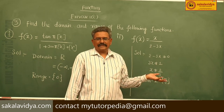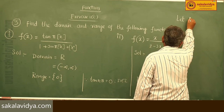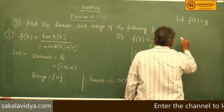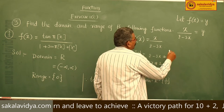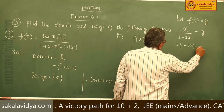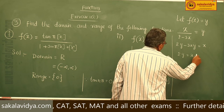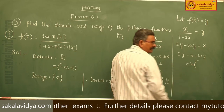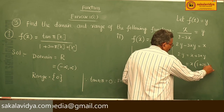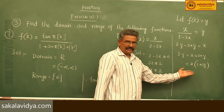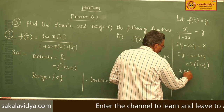To find the range, let f(x) = y. So x / (2 − 3x) = y. Cross-multiplying: x = 2y − 3xy. Then 2y = x + 3xy. Taking x common: 2y = x(1 + 3y). So we can find x in terms of y: x = 2y / (1 + 3y).